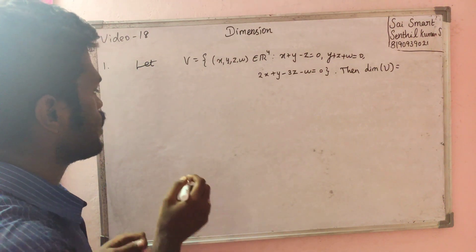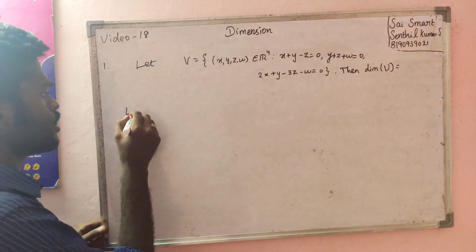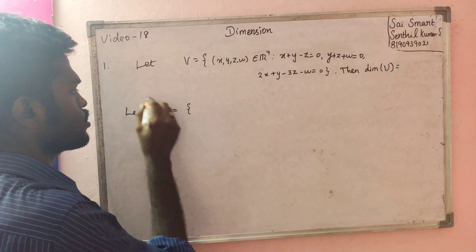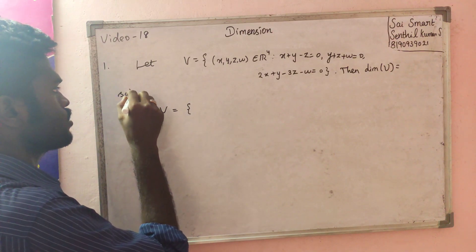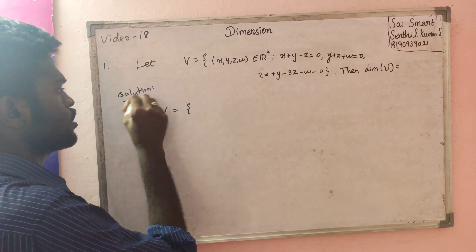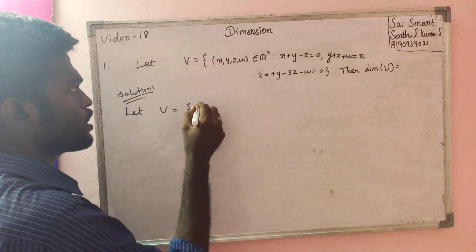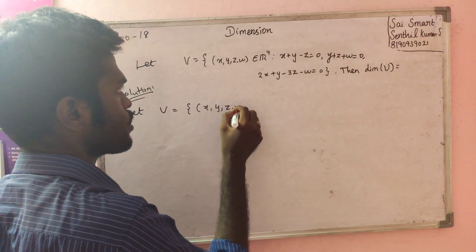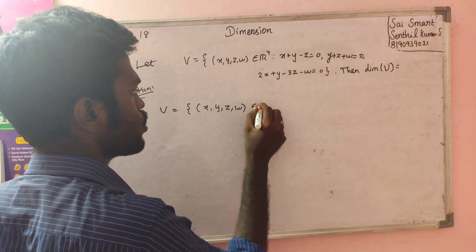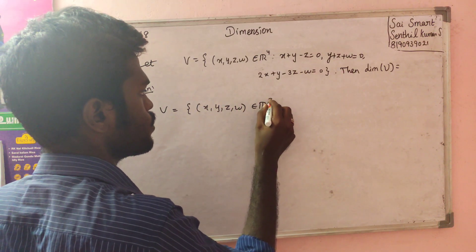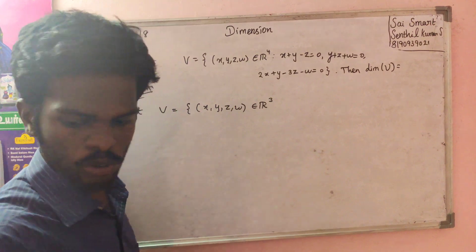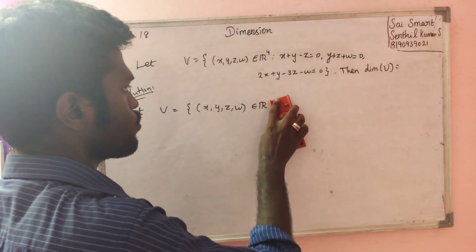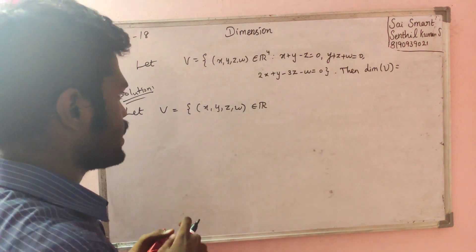Let V be the solution. V is given. So this is the solution. V is the solution where x, u, z, w belongs to R^4.